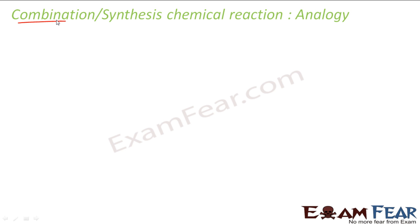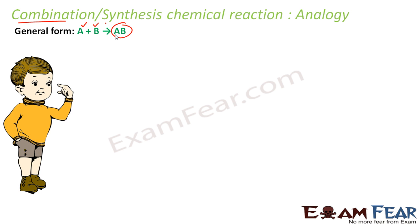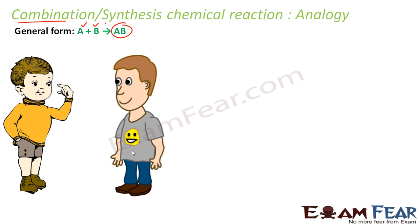The first is the combination reaction. The general form of a combination reaction is: you have two chemicals A and B, they combine to form chemical AB. There may be something required — for example, heat or some external condition — but the general logic is that two chemicals combine or synthesize to form AB.